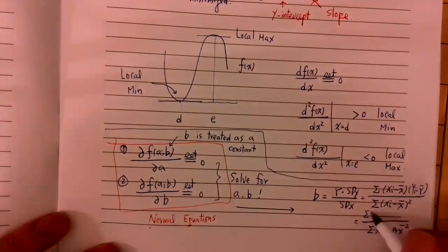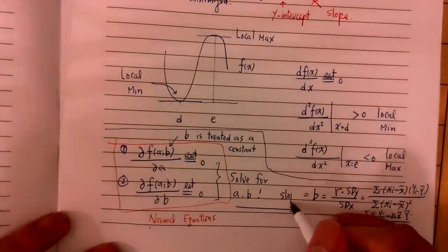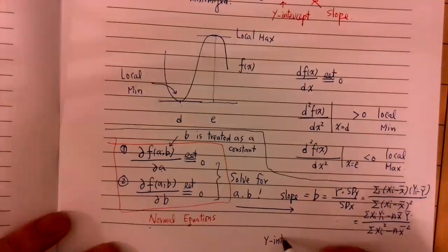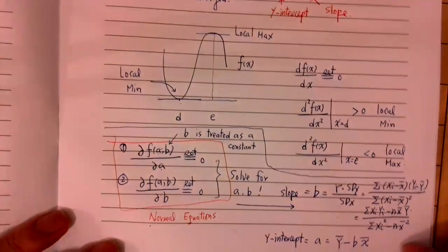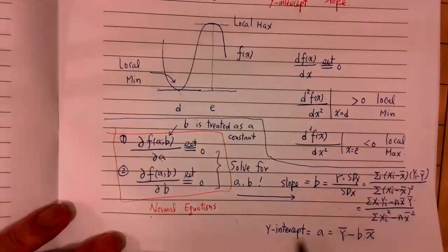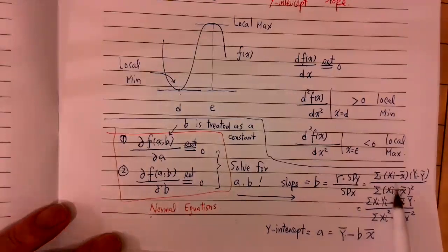Equivalently, you can write B as: summation of x_i squared minus n*x̄² in the denominator, and summation of x_i*y_i minus n*x̄*ȳ in the numerator. This is the slope. And A, the y-intercept, is: average Y minus B times average X. This is the formula to find the best prediction line. Find B first, then find A wisely.